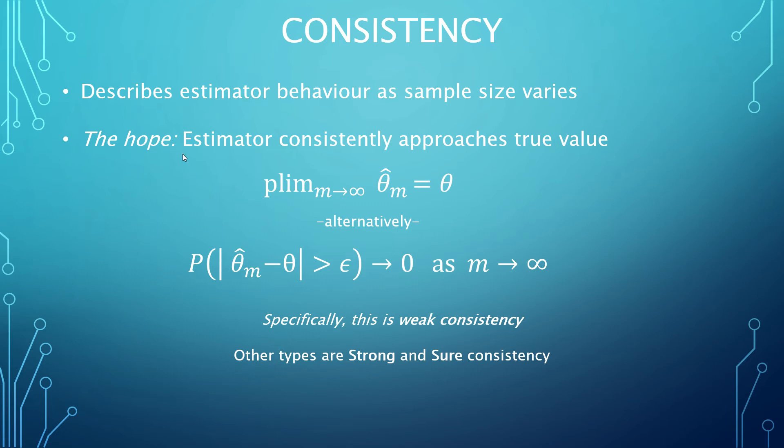Being more mathematically precise, this form of consistency shown here is called weak consistency. Weak consistency is differentiated from other forms of consistency, but this is a pretty nuanced statistical theory that I am not including in this video.